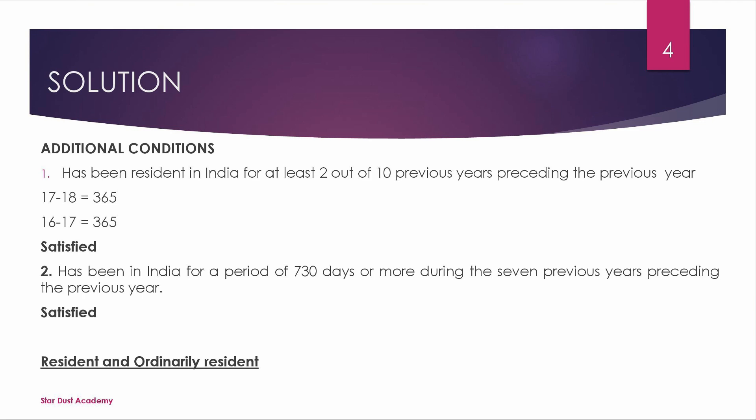Now we have one basic condition and two additional conditions met. There are three residential statuses: one, Resident and Ordinary Resident (ROR); two, Resident but Not Ordinary Resident (RNOR); three, Non-Resident. Non-resident means the basic condition is not satisfied. Resident and Ordinary Resident requires one basic and both additional conditions. Resident but Not Ordinary Resident requires one basic but not both additional conditions.